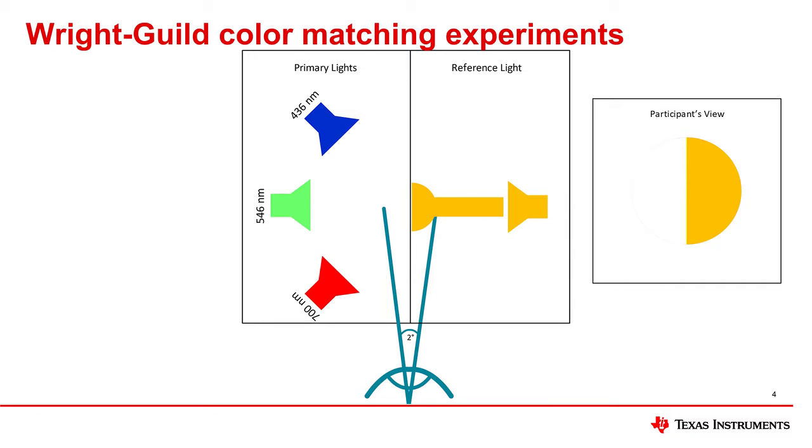In a push to understand color perception in humans, there were two independent experiments performed by scientists W.D. Wright and J. Guild in the 1920s. In these experiments, observers were asked to adjust a series of primary light sources until the resulting color matched a reference light.